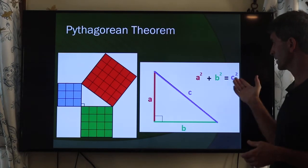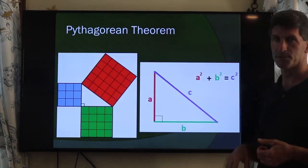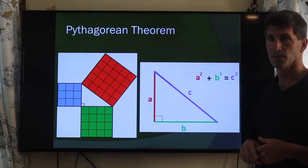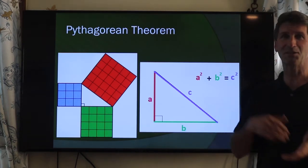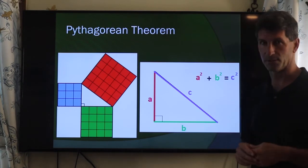a squared plus b squared equals c squared. The opposite side plus the adjacent side - the opposite side squared plus the adjacent side squared is equal to the hypotenuse squared.